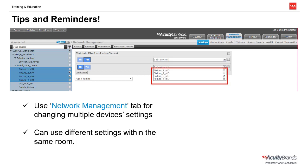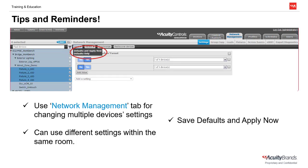Also, we can have devices in the same room with different settings. As you can see in our example, fixtures 1 and 2 are being told to maintain dim level when vacant YES, while fixtures 3 and 4 are being told to remain at NO. And finally, always remember to save defaults and apply now.